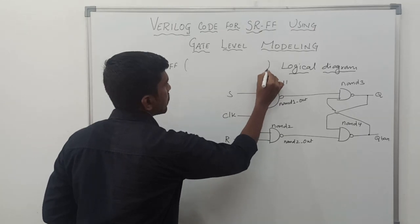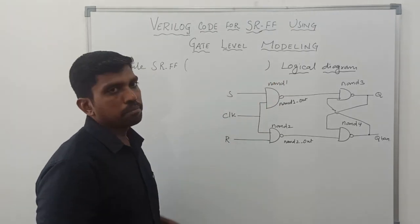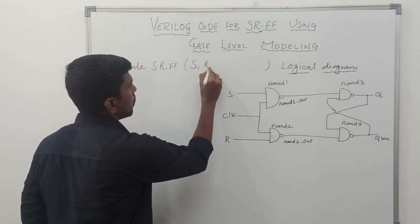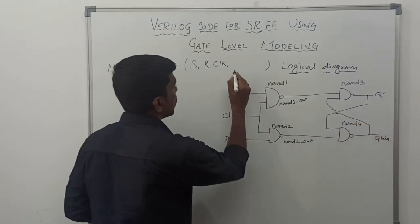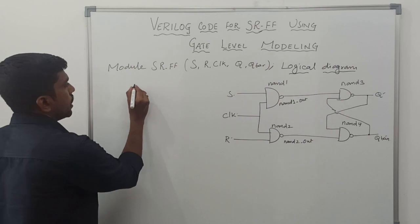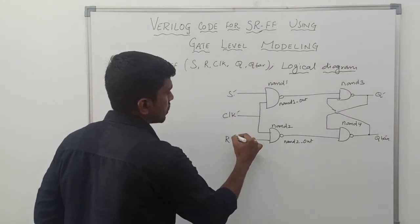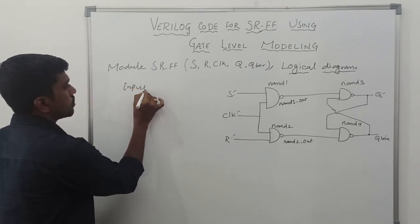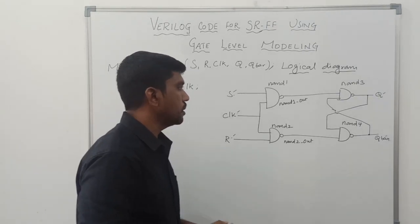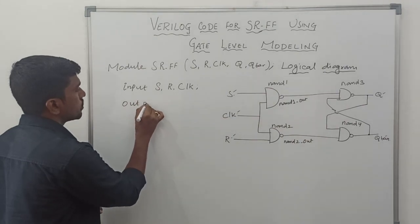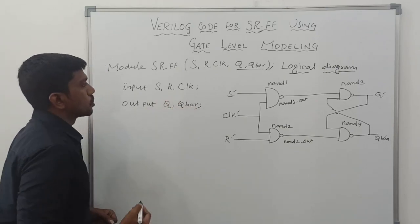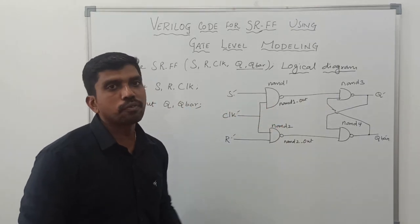After writing the module name, you mention the input parameters and output parameters within brackets. The input values are S, R, and clock. The outputs are Q and Q bar. We then assign the input variables — S, R, and clock are considered input signals — and the output signals Q and Q bar.